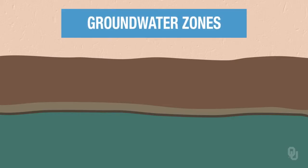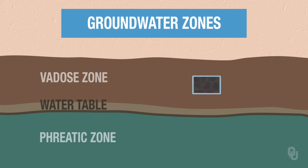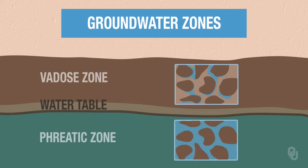Now when water occurs in the ground, there are two zones. There's the vadose zone, which is above what is called the water table, and then there's the phreatic zone, which is below the water table. In the vadose zone, the pores are filled mostly with air, maybe a little bit of water. In the phreatic zone, below the water table, the pores are filled with water.